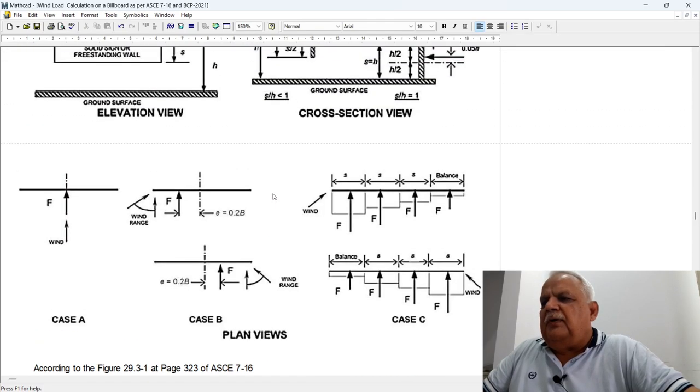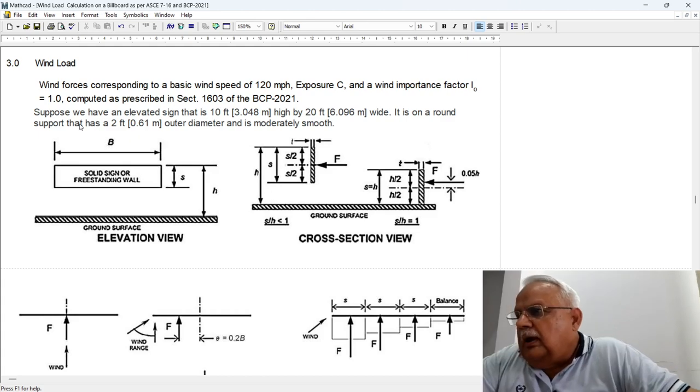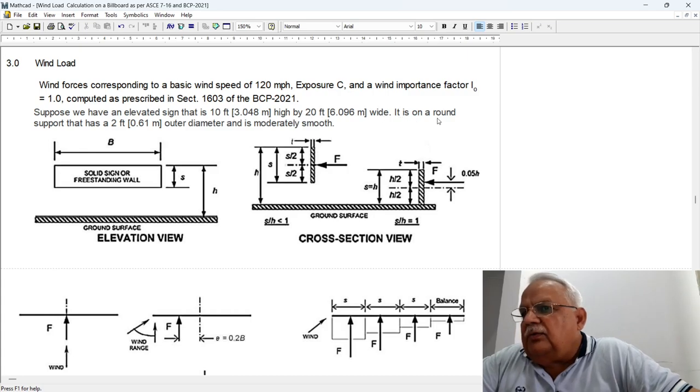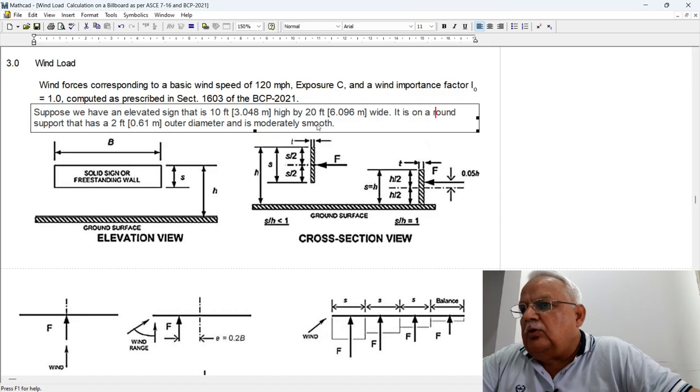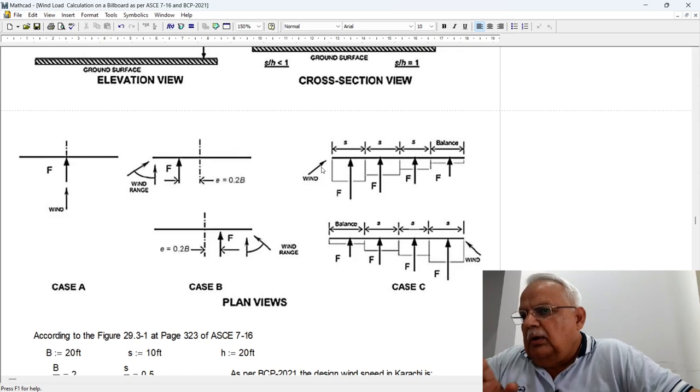Same figure is repeated over here. And I just consider that suppose we have an elevated sign that is 10 feet high by 20 feet wide and it is on a round support that has 2 feet outer diameter and is moderately rough.